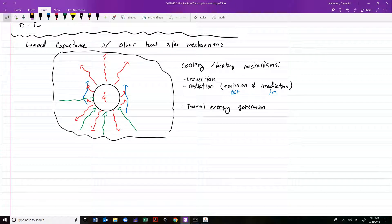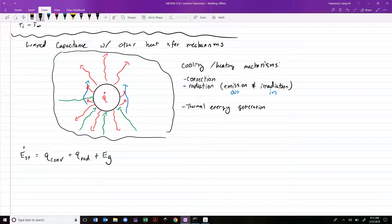The question is, can we use lumped capacitance to deal with this, and if so, how? Turns out the answer is yes, and it's quite elegant how we do it, and it ends up being really quite simple. We'd start out by writing our energy balance. So stored energy is equal to, in this case, Q convection plus Q radiation plus E G.